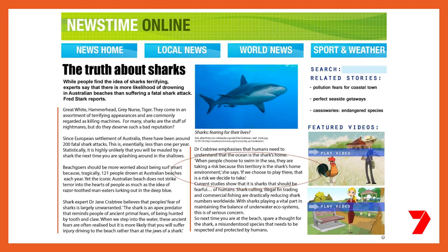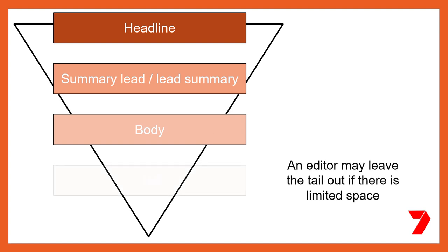I find the quote from Dr Crabtree interesting. She says, 'When people choose to swim in the ocean, they are taking a risk because this territory is the shark's home environment.' This is interesting as it is an argument that I have read in different news reports when there are shark sightings or shark attacks. The tail of a news report contains the least important information and can be left out if there is limited space in the publication.